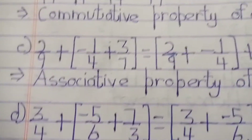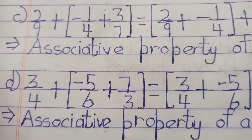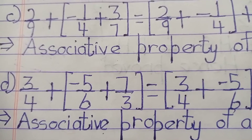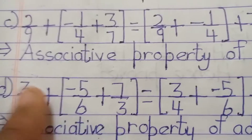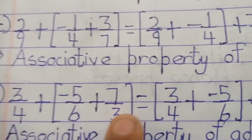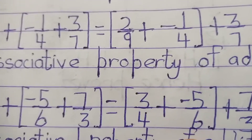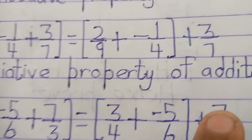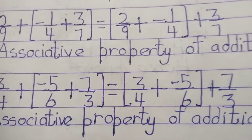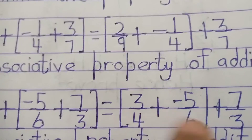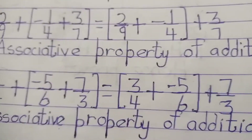The expression 3/14 + (-5/6) + 7/3, and also 3/4 + (-5/6) + 7/3 — this is the associative property of addition.